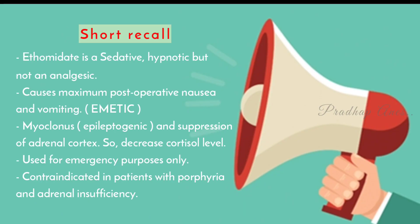Short recall: Etomidate is a sedative and hypnotic but not an analgesic. It causes maximum post-operative nausea and vomiting, myoclonic activity, and suppression of the adrenal cortex leading to decreased cortisol levels. It is used for emergency purposes only and is contraindicated in patients with porphyria and adrenal insufficiency.